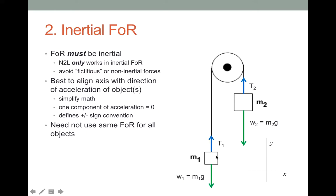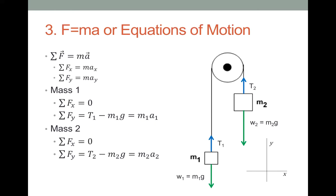One key thing is we could technically describe each one of these motions for the two objects using a different frame of reference, but here we're not — both are moving up and down. Now that we have our frame of reference, we're set to apply Newton's second law. Newton's second law is a vector equation: the x-component of the net force must equal the mass times the x-component of the acceleration, and the same for the y-component. So this is really two equations in one.